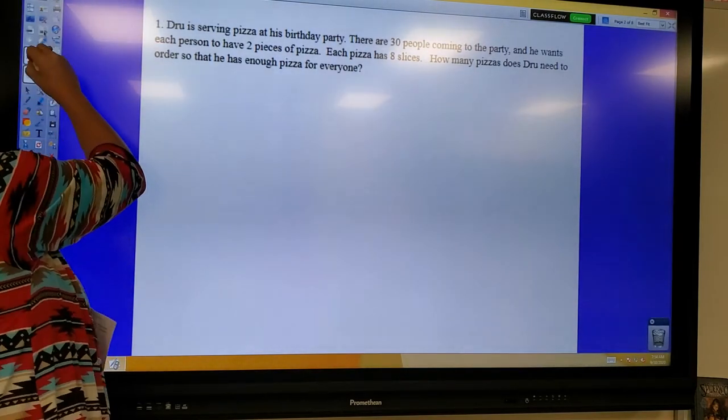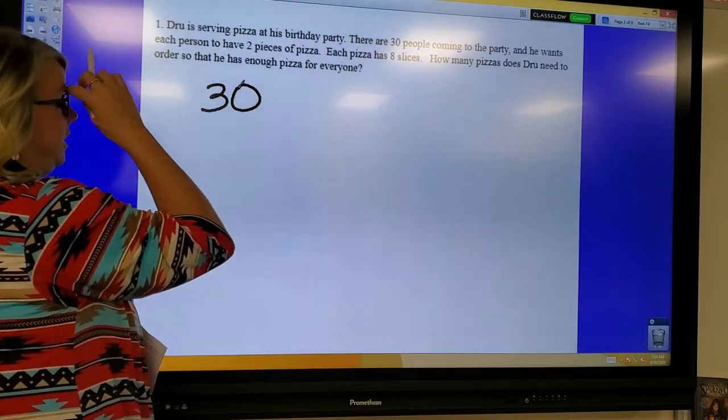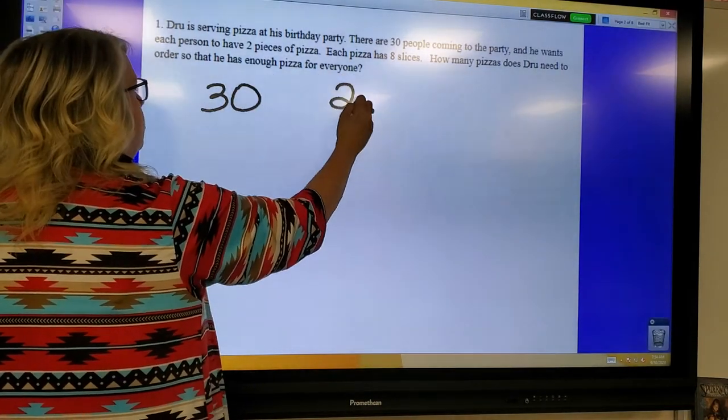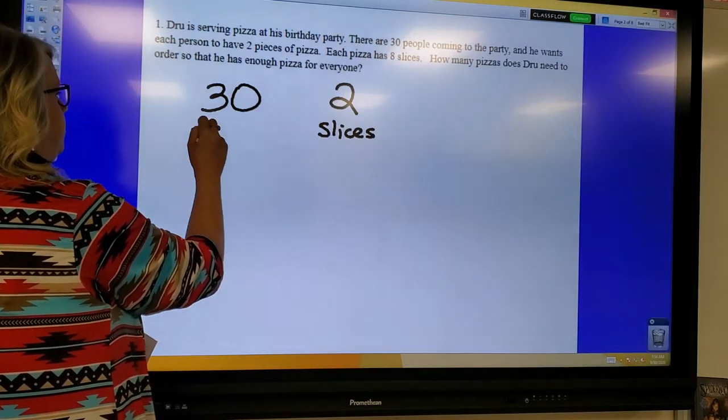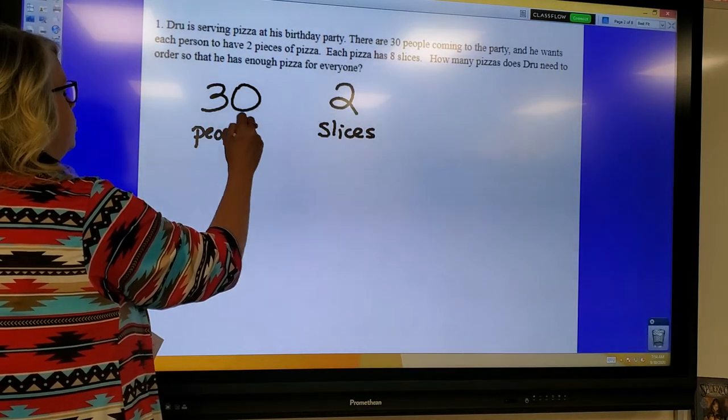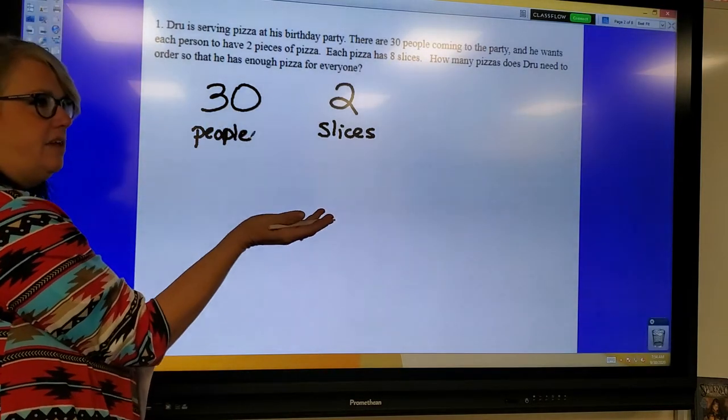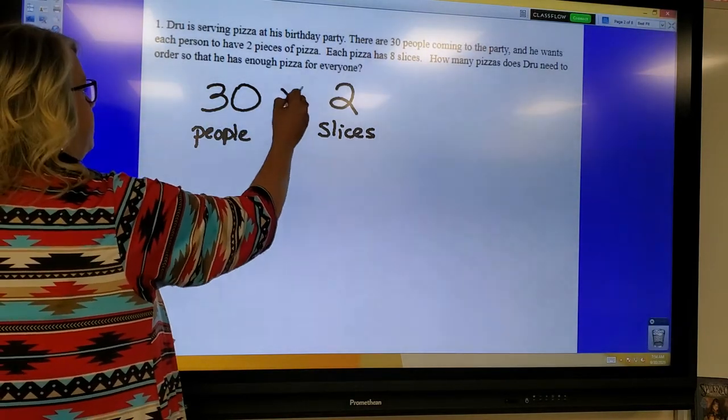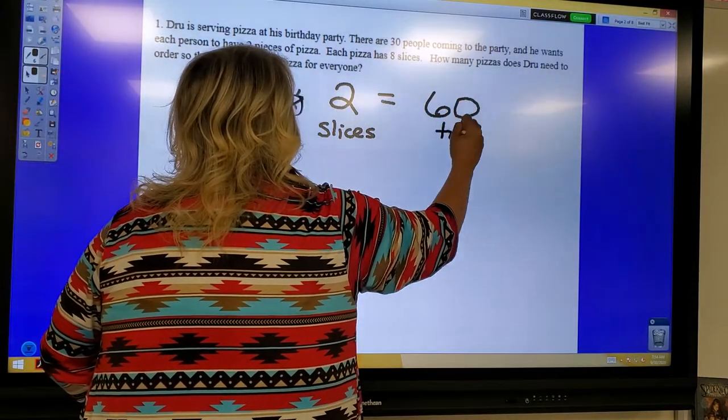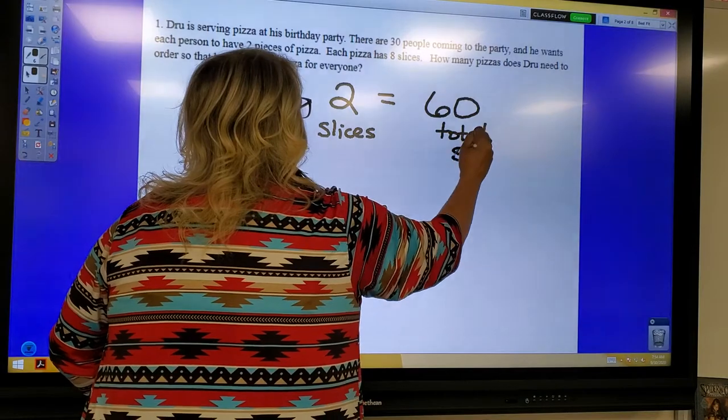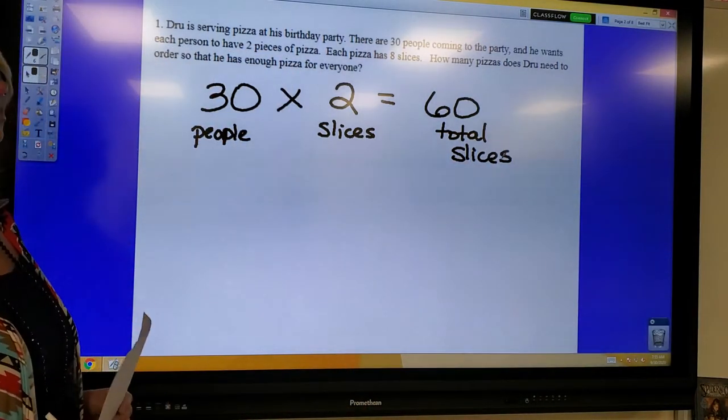So I'm going to start off with the fact that Drew is going to have 30 people coming to the party, and each person is going to have two slices. So 30 people, two slices for each person. If people were only going to have one slice, that'd be 30 slices. So since they're having two slices, that would be 60 total slices. So that's your first step. Figure out how many total slices you're going to need.